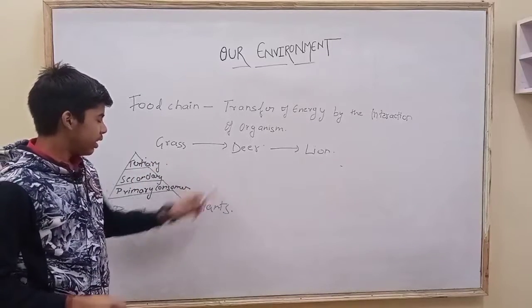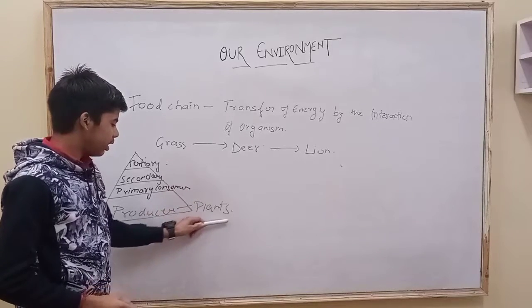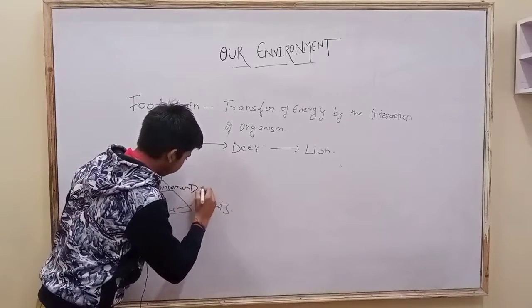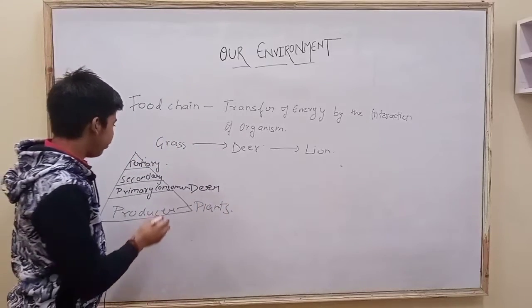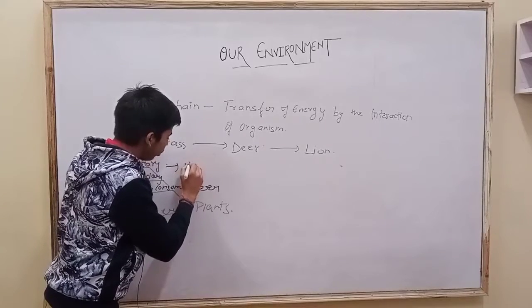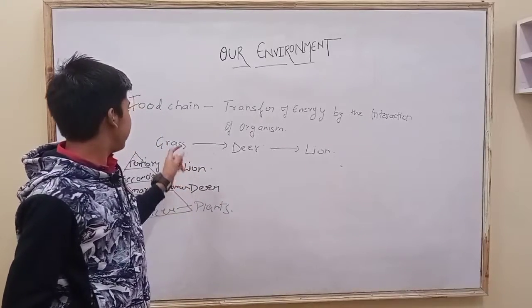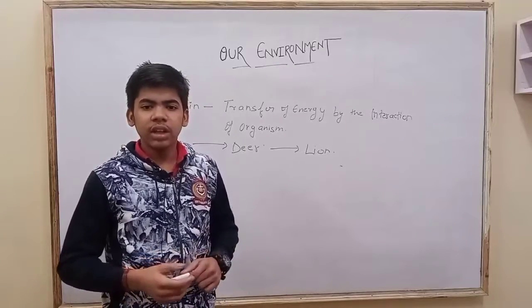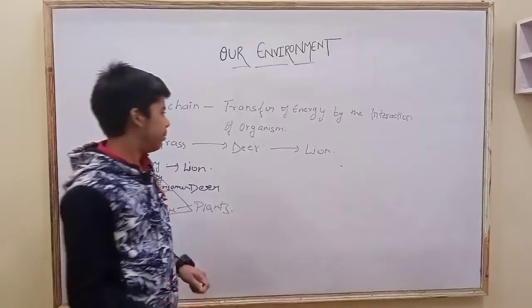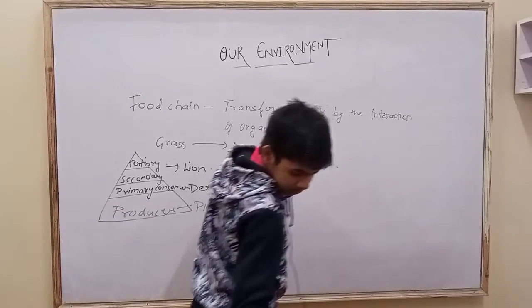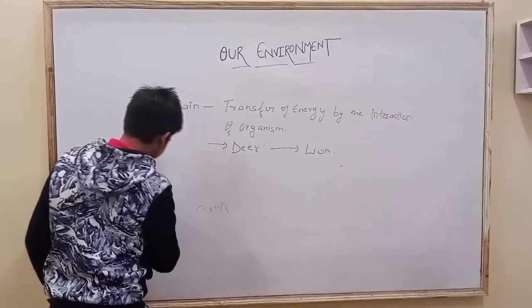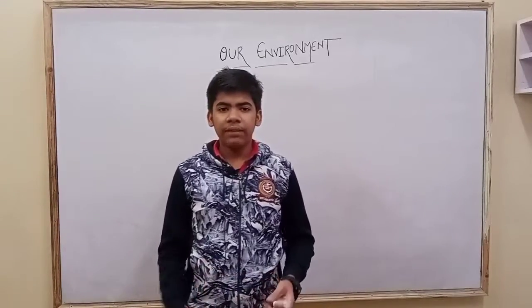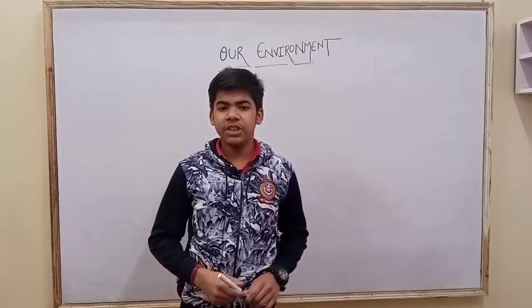Primary consumers consist of deer. We have plants as producers, then deer as a consumer, and deer will be eaten by the lion. After the food chain, we have the food web — the branching network of food chains in which many food chains are combined and form a web-like structure, called the food web.